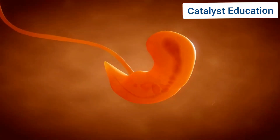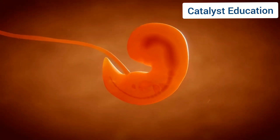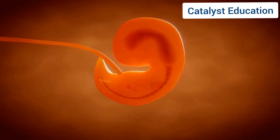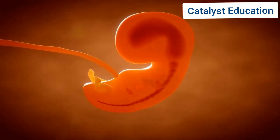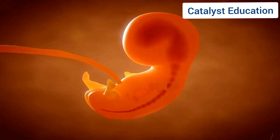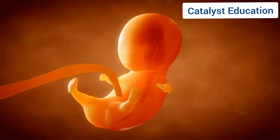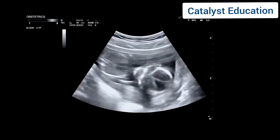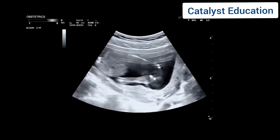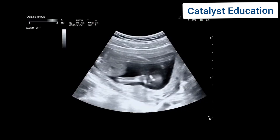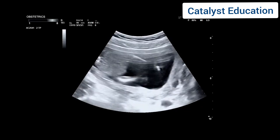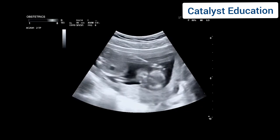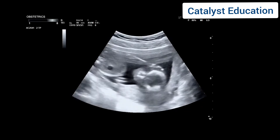The zygote implants in the uterus, developing into an embryo through gestation over approximately 9 months. Ultrasounds reveal the fetus's growth stages, showcasing the miraculous development during gestation.